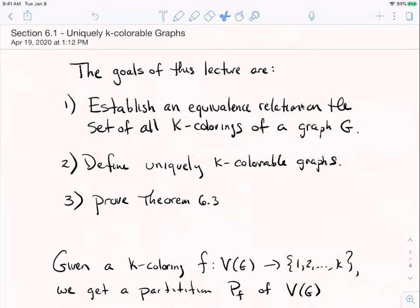Hey, welcome back to Graph Theory. In this video lecture we're going to wrap up our work in section 6.1 on vertex coloring by looking at something called uniquely k-colorable graphs. So the goals of this short lecture are to first establish an equivalence relation on the set of all k-colorings of a graph that's k-colorable.